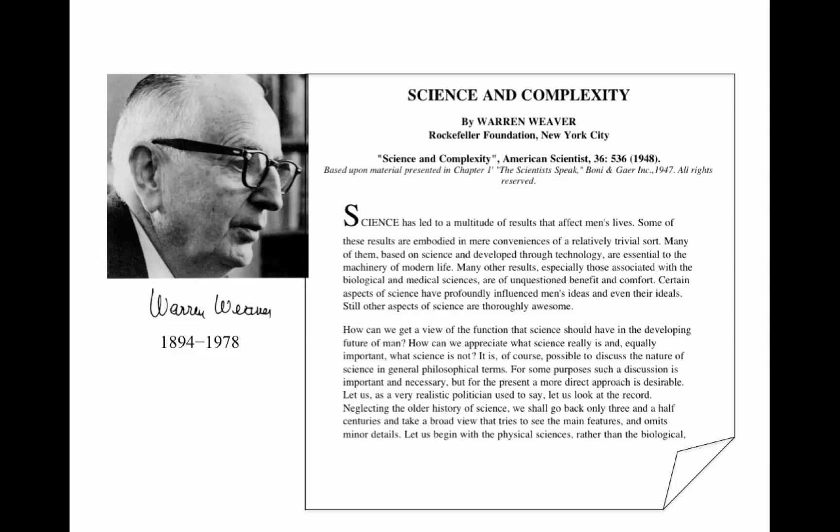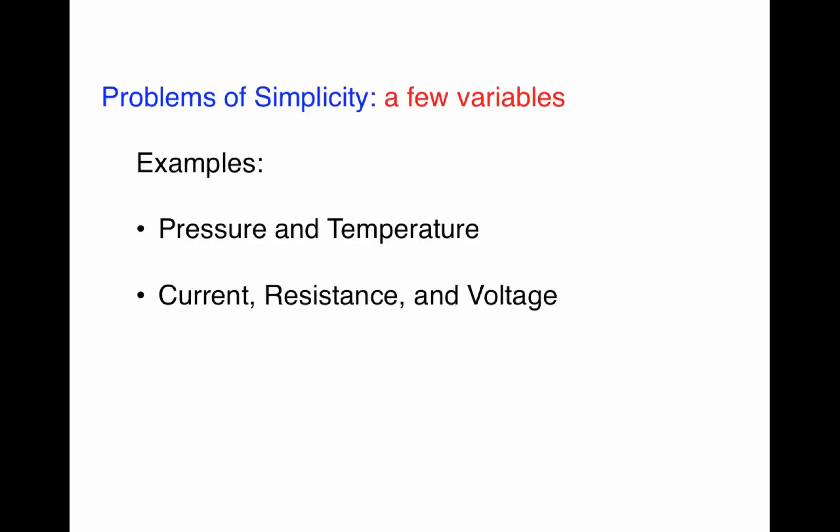The first category he called problems of simplicity. These are problems that involve just a few variables. Some examples might be relating pressure and temperature in thermodynamics, or in electricity, relating current, resistance, and voltage. In population dynamics, relating population versus time. These are all problems that were dealt with in the 19th and early 20th centuries, in physics, chemistry, biology, and so on.